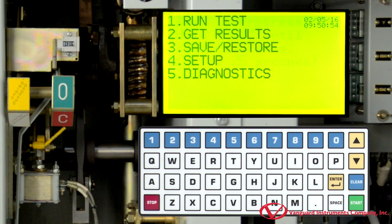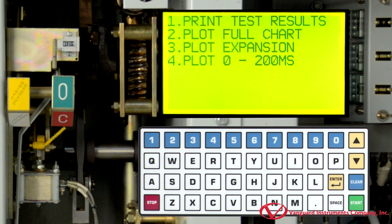Once we have performed the test, we can print the test results to the unit's built-in thermal printer. To print the test results, select Get Results by pressing the 2 key. We are now presented with multiple options for printing the test results.